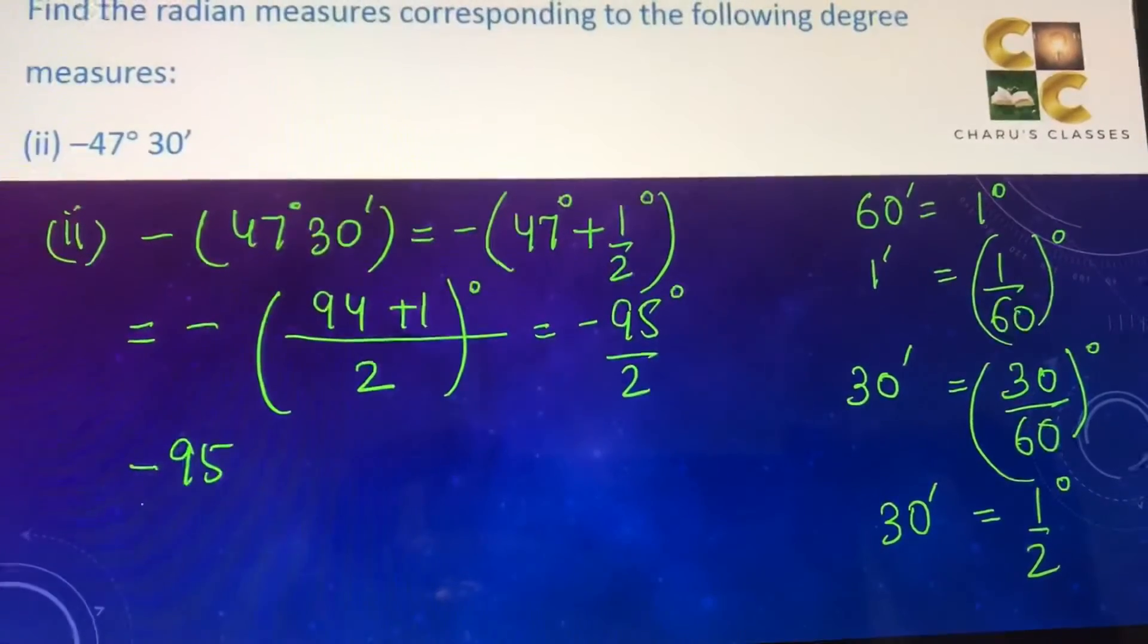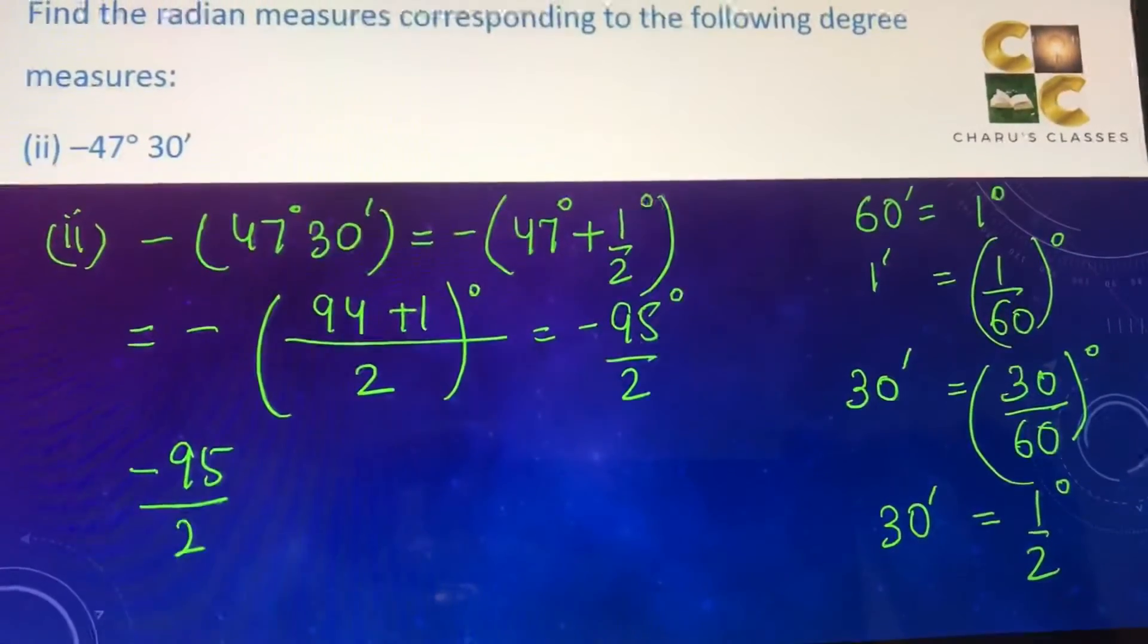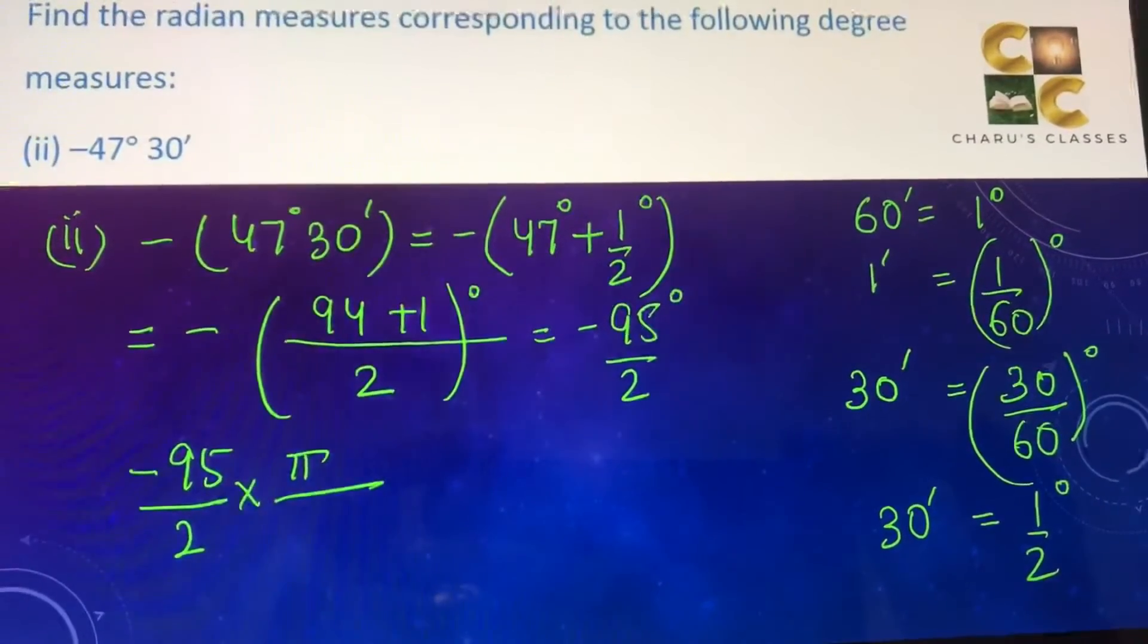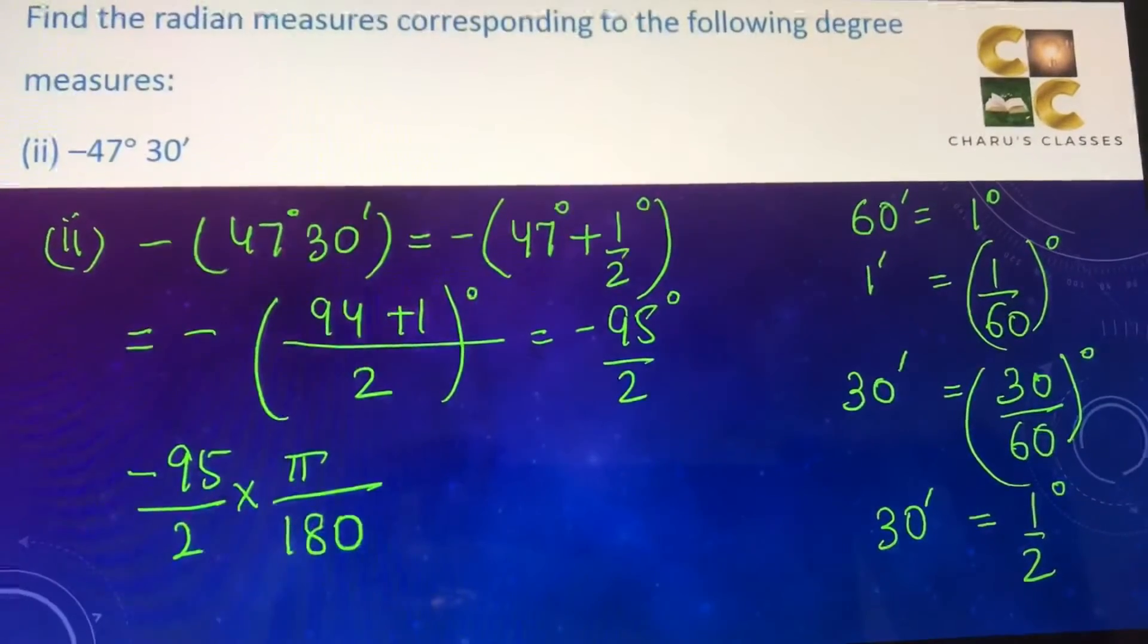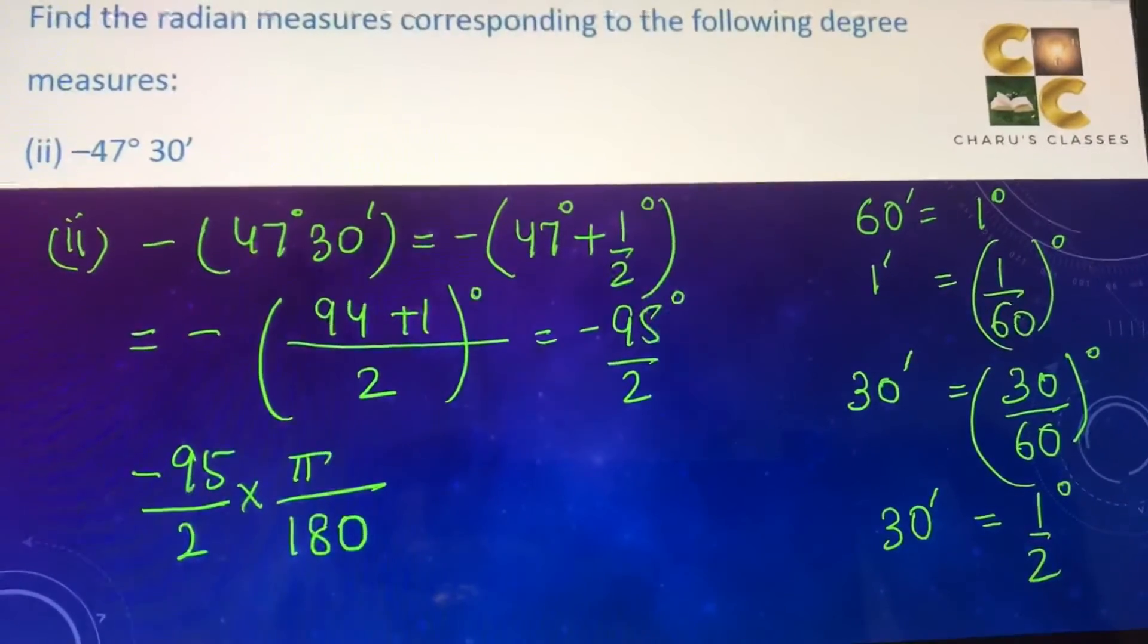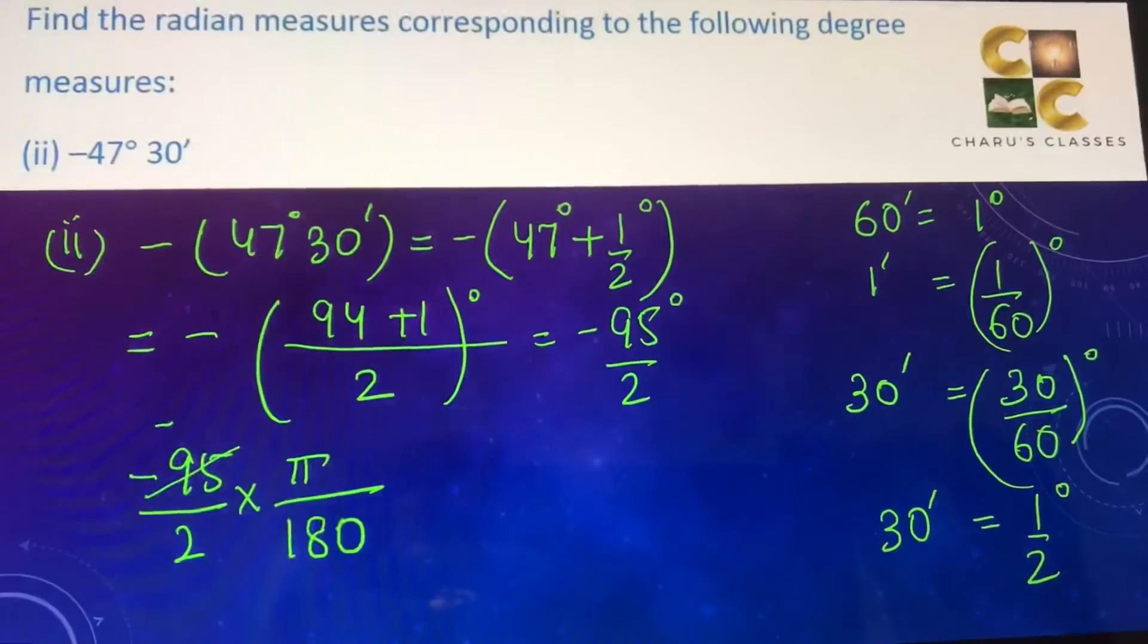So to convert it into radians, this has to be multiplied by π by 180. So we can cancel, that is minus 19 by 36.